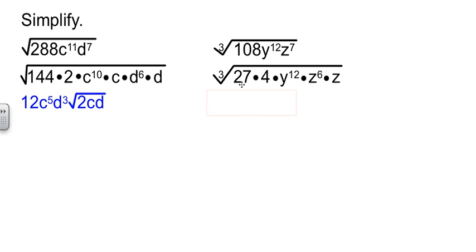Take the cube roots that we know. Cube root of 27 is 3. Cube root of y^12 is y^4. Cube root of z^6 is z squared. And then what are we left with? The cube root of 4z.